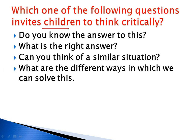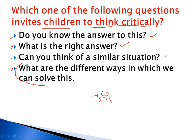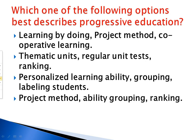Question 5: Which one of the following questions invites children to think critically? If you ask a child 'Do you know the answer to this question?' they will eagerly reply with the right answer. 'Can you think of a similar situation?' is also somewhat surface-level. However, 'What are the different ways in which we can solve this?' — if you give a particular problem and ask the child how many different ways they can solve it, the child has to think critically. This is the correct option.